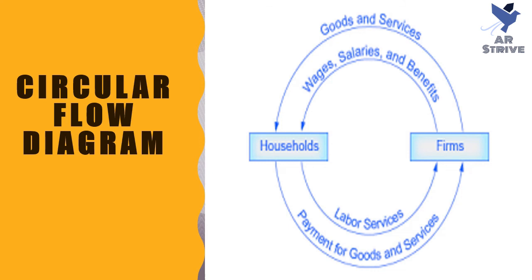A good model to start with in economics is the circular flow diagram. It pictures the economy as consisting of two groups — households and firms — that interact in two markets: the goods and services market, in which firms sell and households buy, and the labor market, in which households sell labor to business firms or other employers.